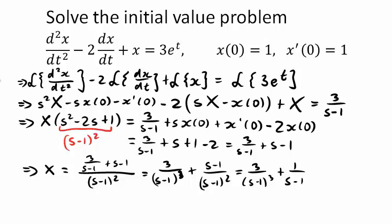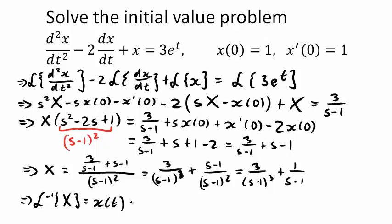In the next step, we find the inverse Laplace transform of capital X, because that gives us lowercase x(t) — the solution of the differential equation. The term 1 over (s - 1) is simple: its inverse Laplace transform is just e^t.